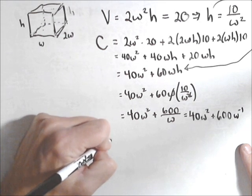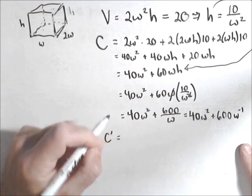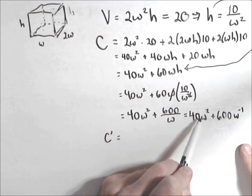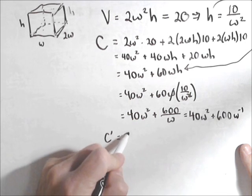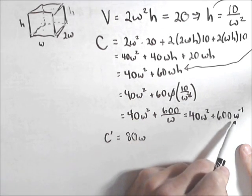So now that we have it simplified, we need to find any critical points. C prime. Alright, this is an easy one. Just a little power rule. It's 80w.